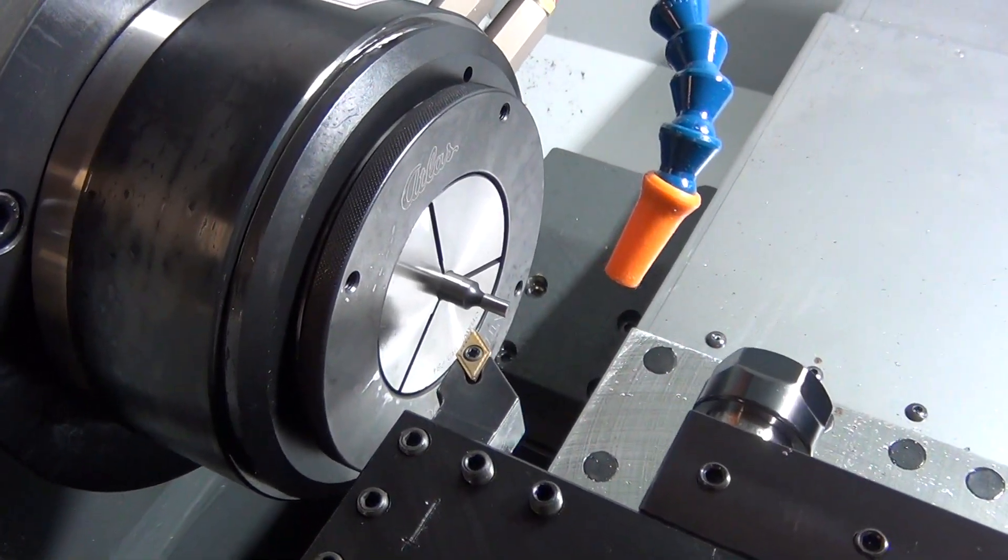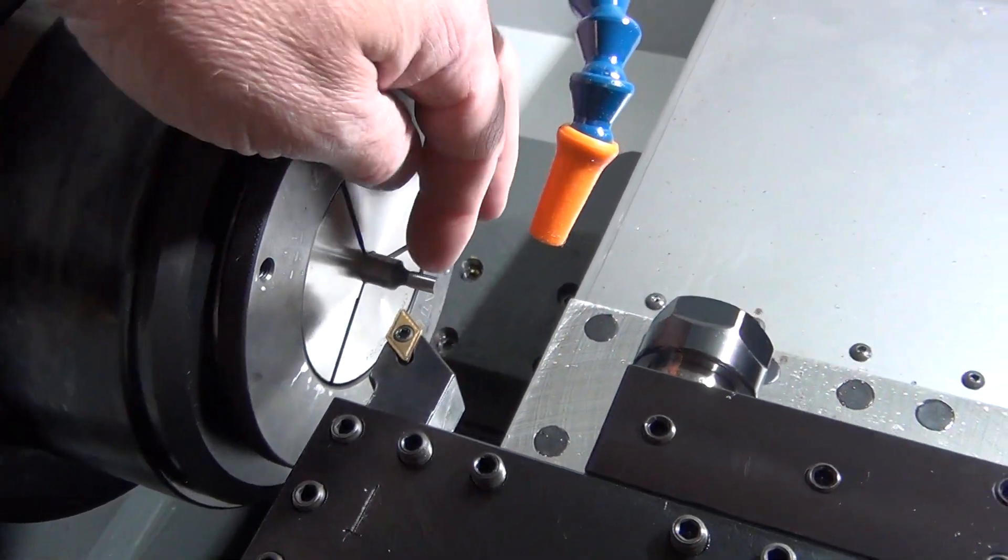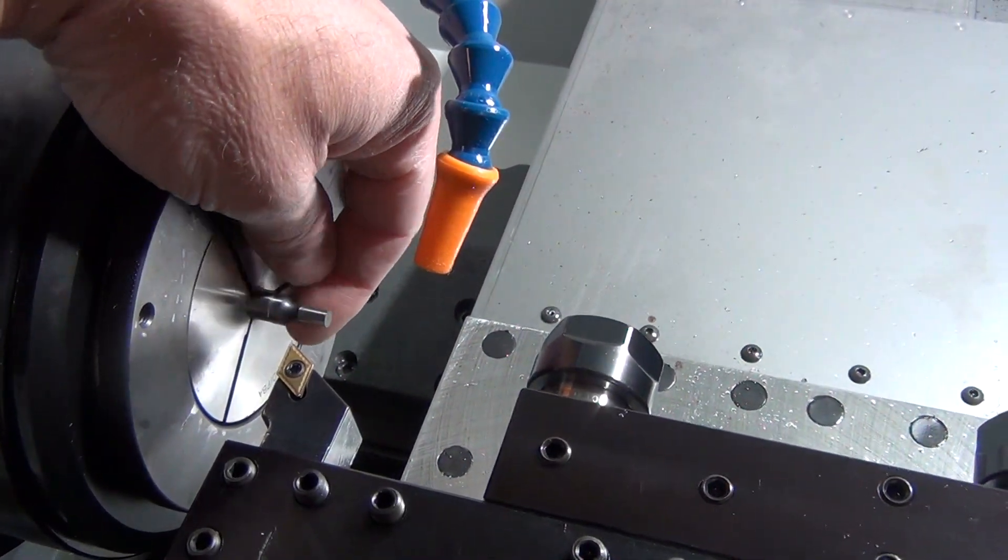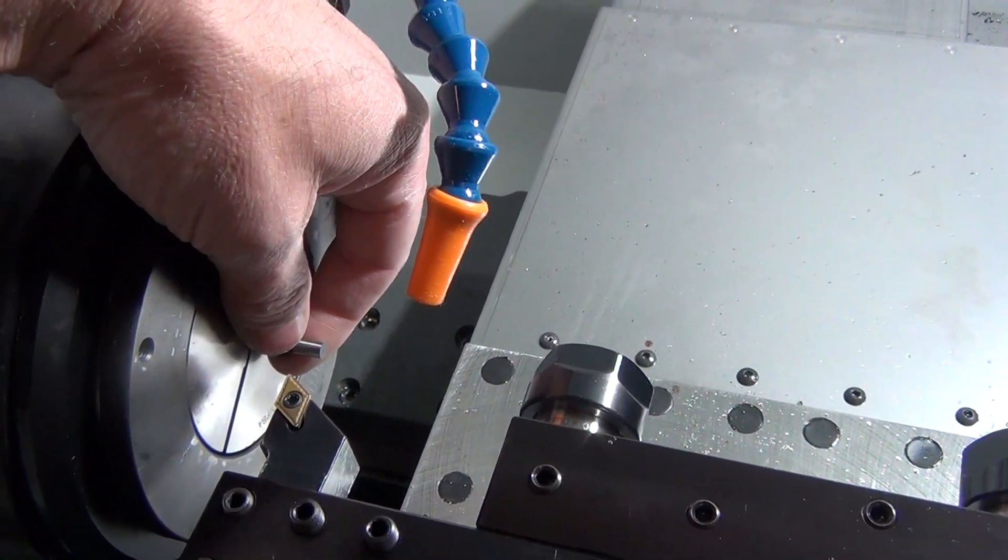Tom Matthews from Matthews Engineering here. I'm going to show how to use one of these wigglers to calibrate X offset on a lathe.